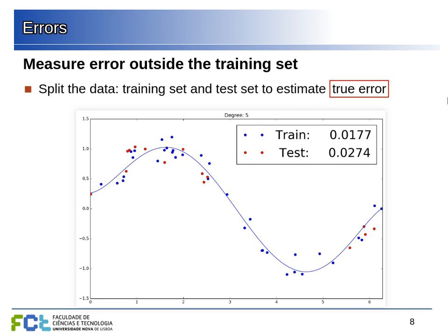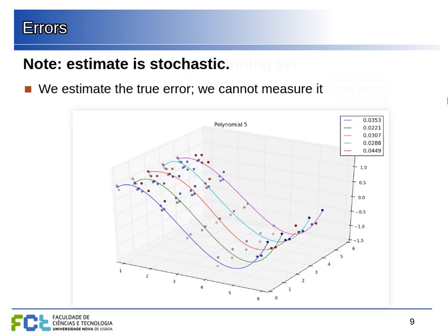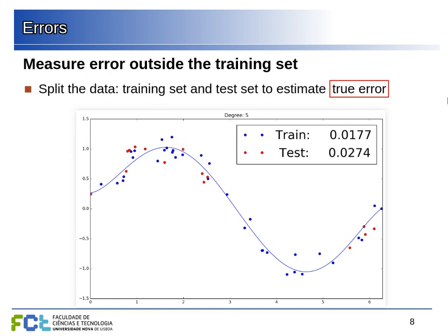We can split the data randomly into two sets. The training set is used to adjust the parameters and find the best hypothesis. The test set is left out to estimate the true error. The true error is the average error over all the universe of points we'll encounter in the future — if we could test our model on an infinite number of points, the average error would be the true error.